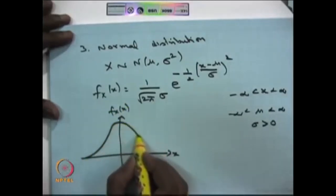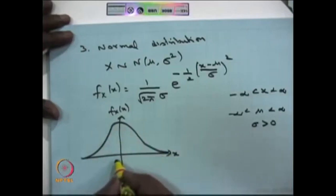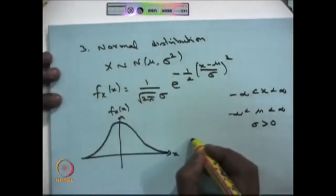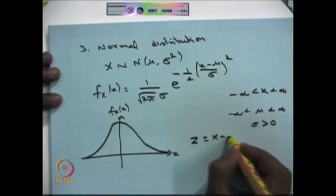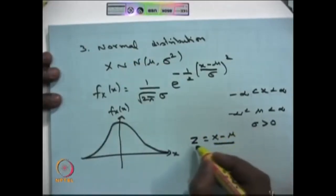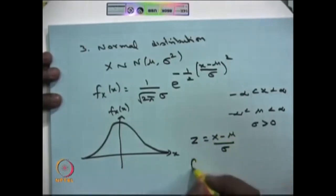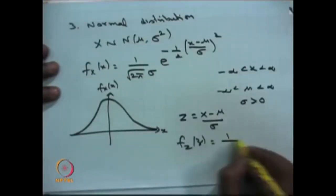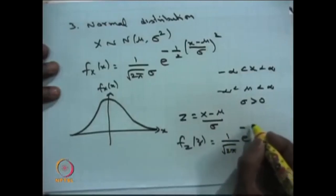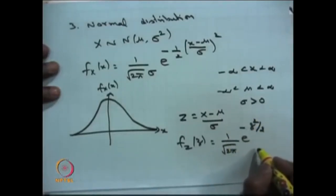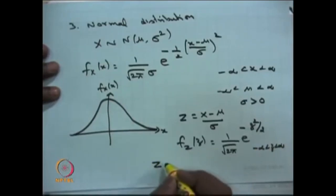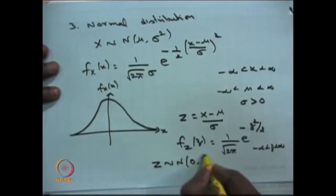The PDF of f(x) looks like a bell shape, shown here with mu equal to 0. You can always convert the normal distribution to the standard normal using the substitution z = (x - mu)/sigma, giving the standard normal PDF: (1/sqrt(2*pi)) * e^(-z^2/2) where z lies between minus infinity and infinity. The standard normal distribution has mean 0 and variance 1.